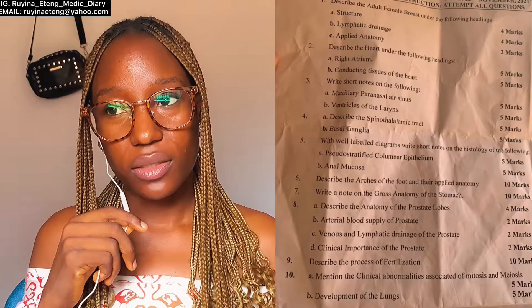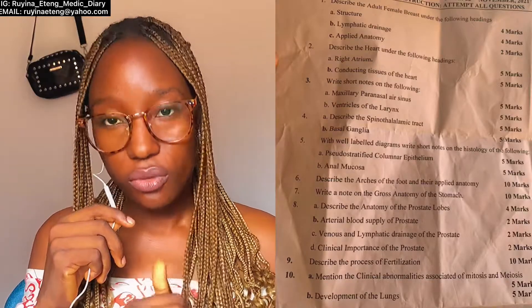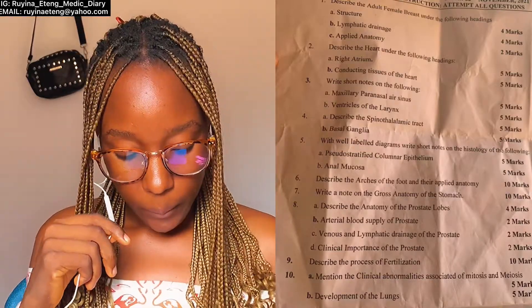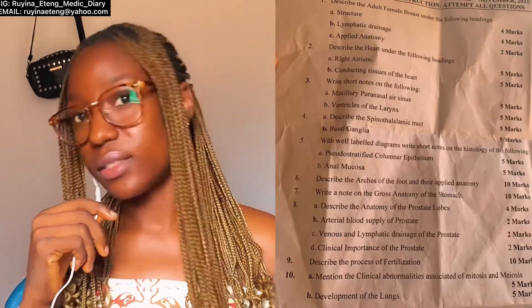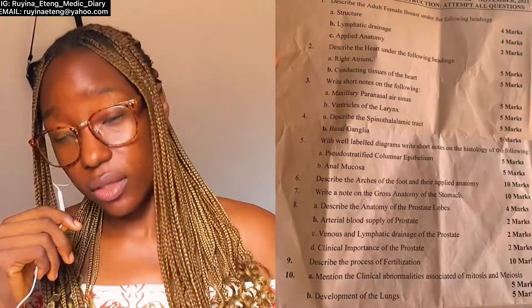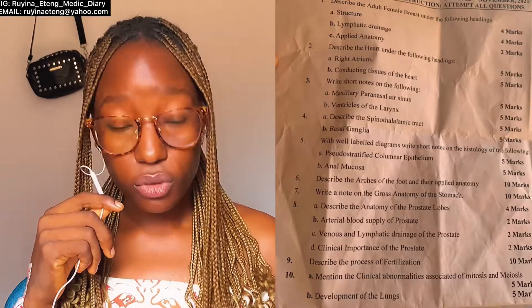Question four: (a) spinal thalamic tract and (b) basal ganglia. For spinal thalamic tract — this is neuroanatomy — write the introduction, then the origin of the tract. Since it's an ascending tract, make sure you include that in your introduction. Then write about the first-order neuron, second-order neuron, and third-order neuron as separate headings, where they synapse, and what kind of impulse they carry. There's the anterior spinal thalamic tract and the lateral spinal thalamic tract — state what each carries. Draw a diagram if you can; it helps a lot. Cover crude touch, fine touch, pain, temperature, and so on.